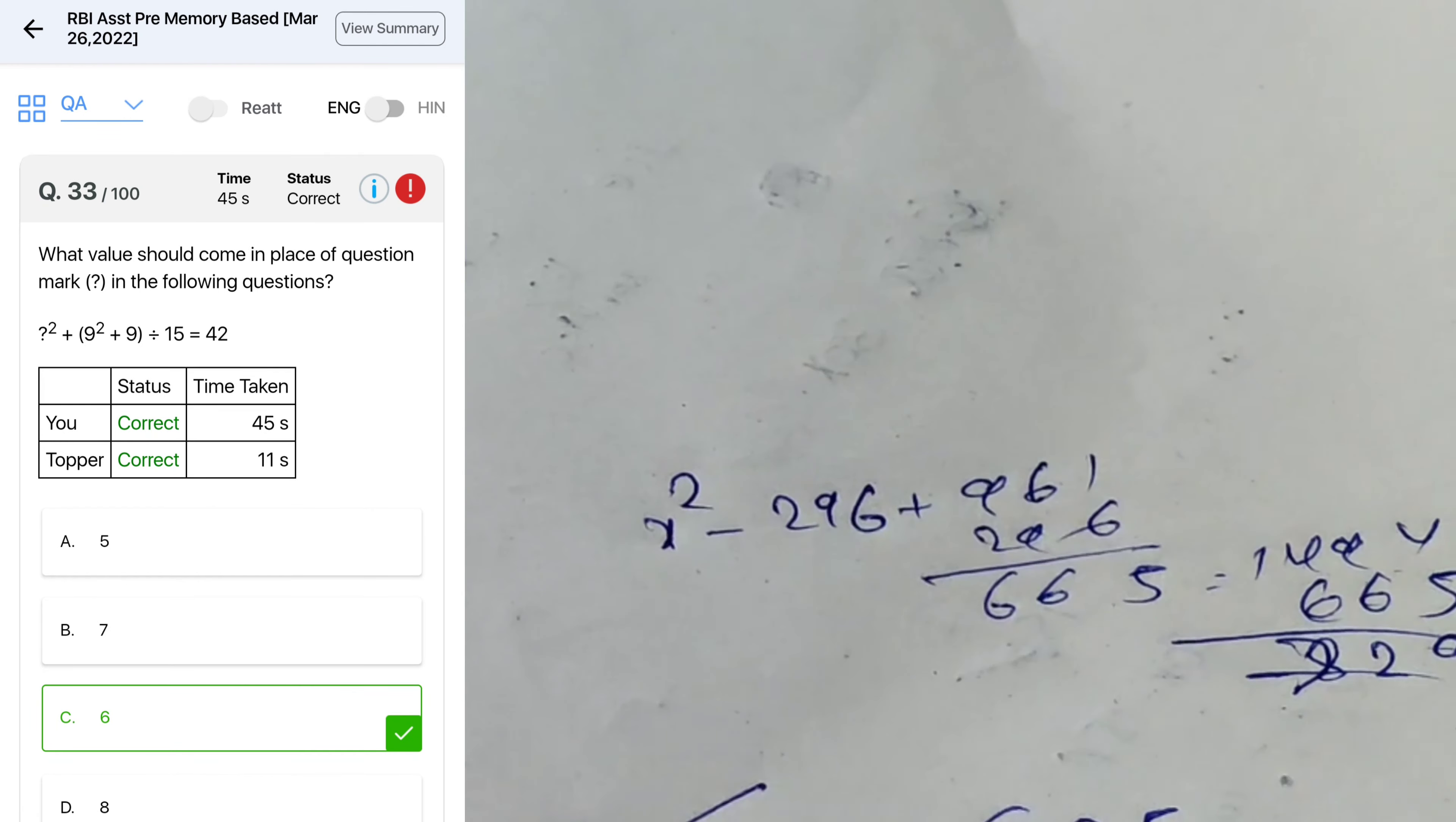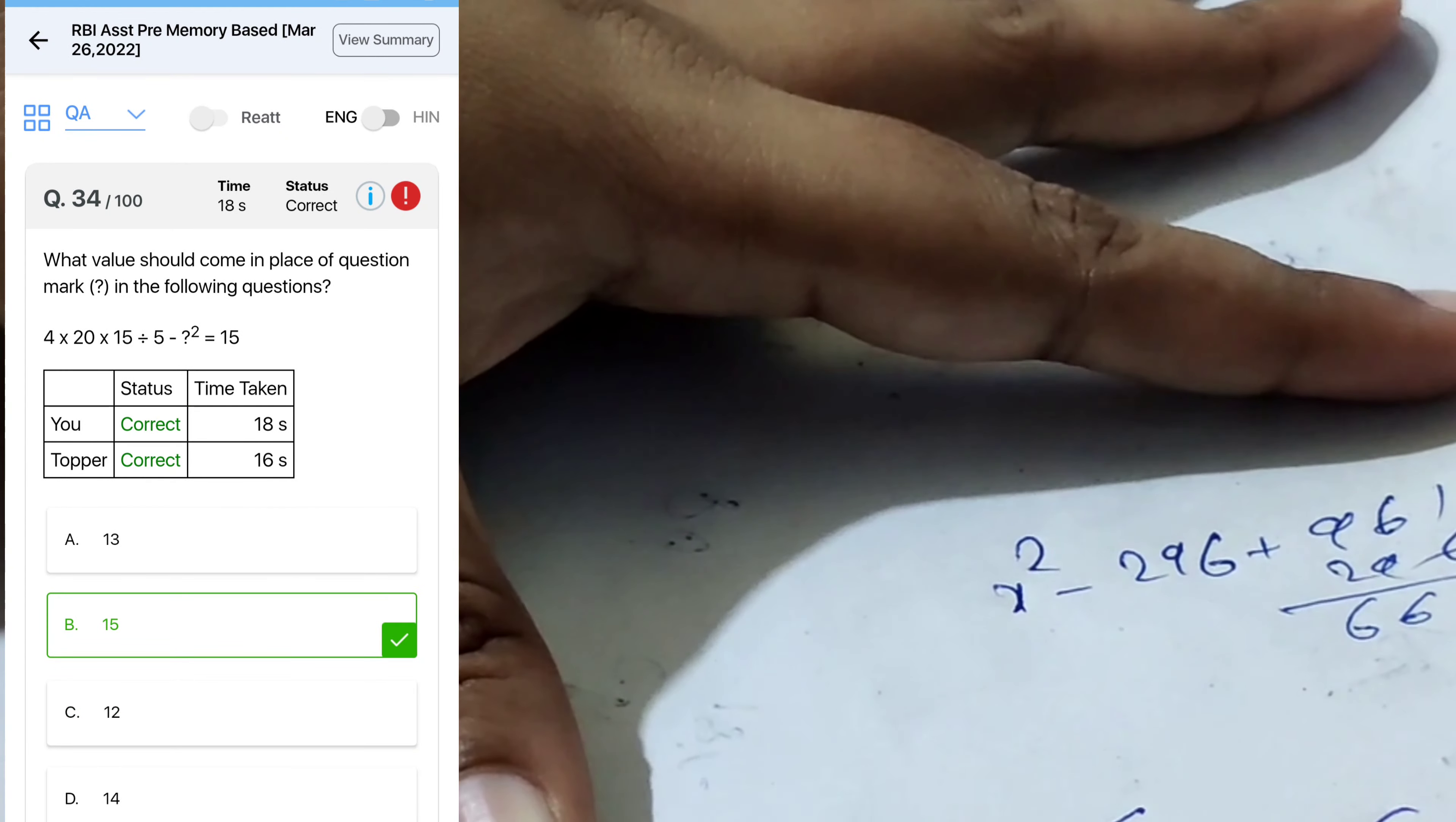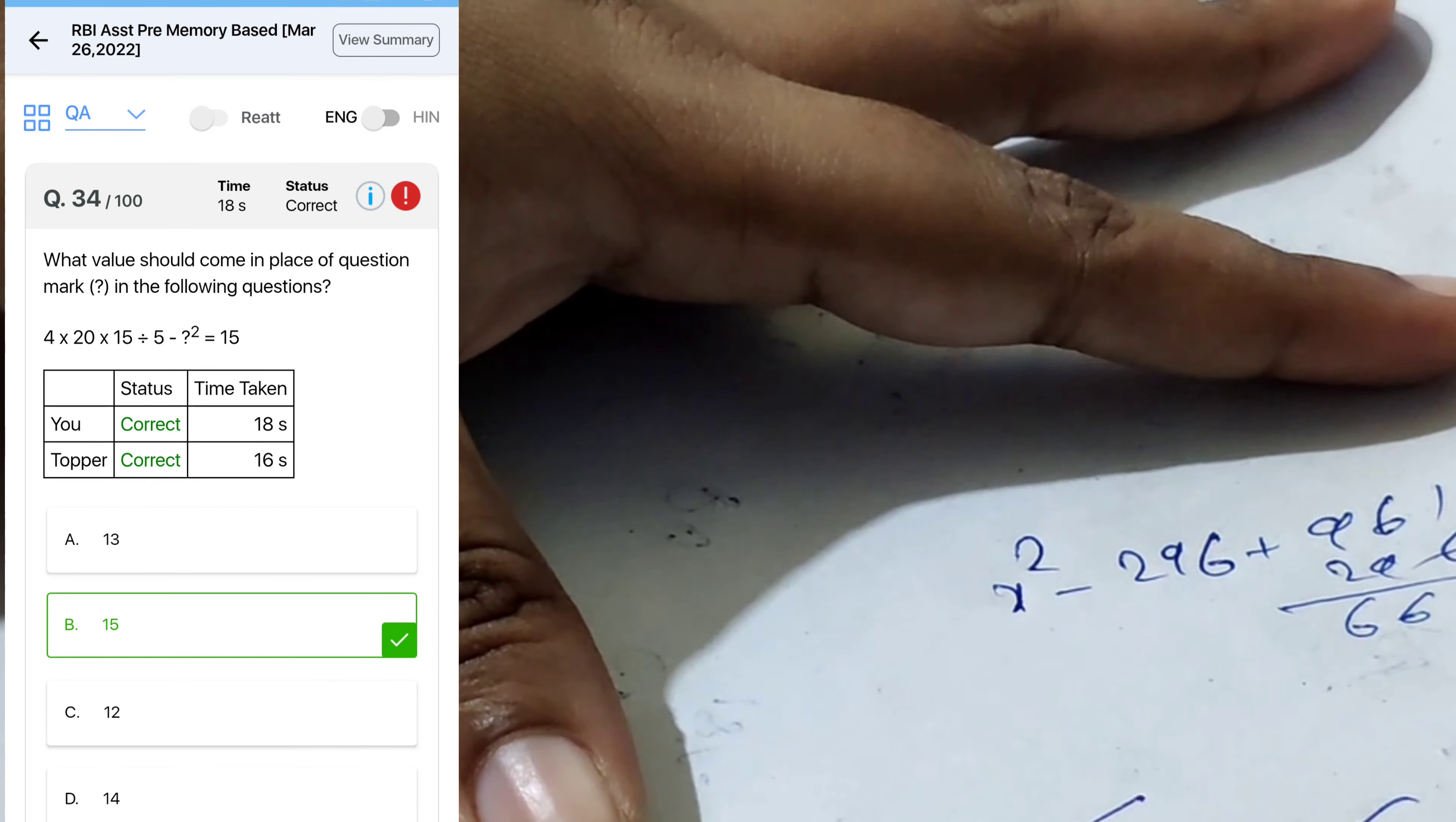X squared plus 90 by 15, so it's 6 times 42 minus 6, 636, 6 squared. Next equation 4 into 20, 8 is 80 into 15 by 5 minus x squared equal to 15, it's 3240 minus 15, it's 5228, it's 15 squared.